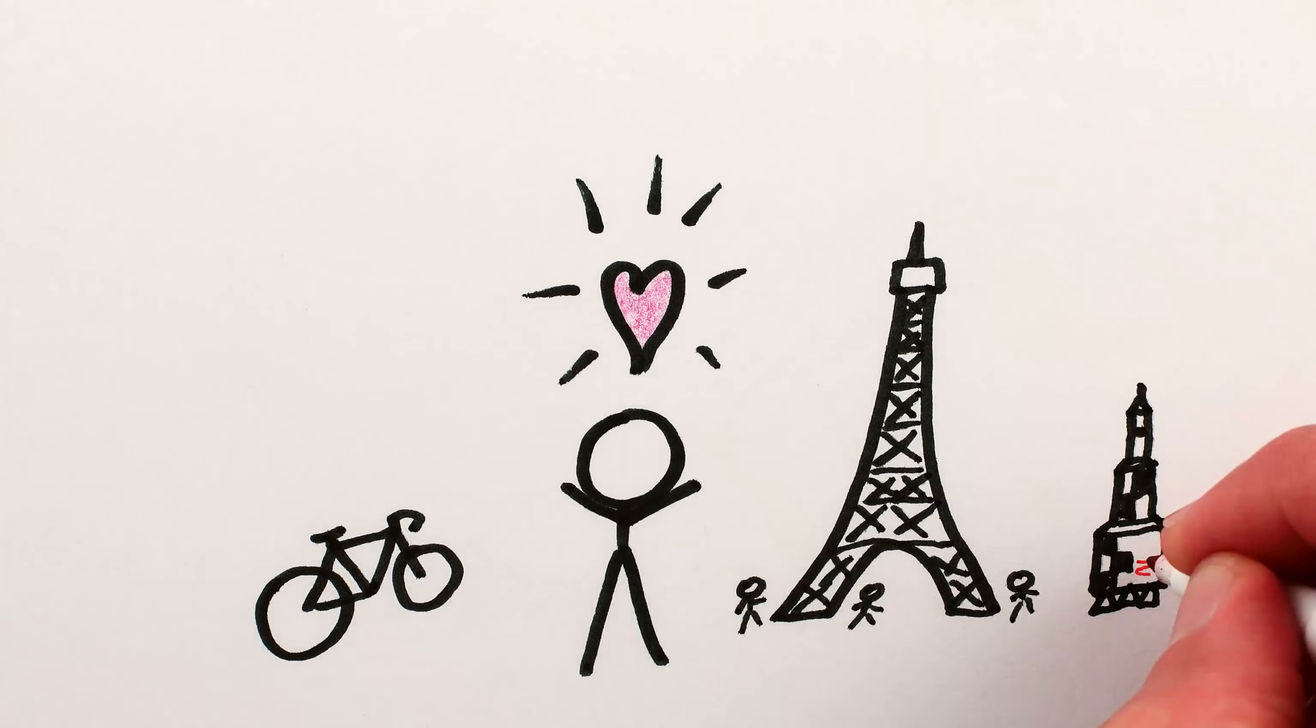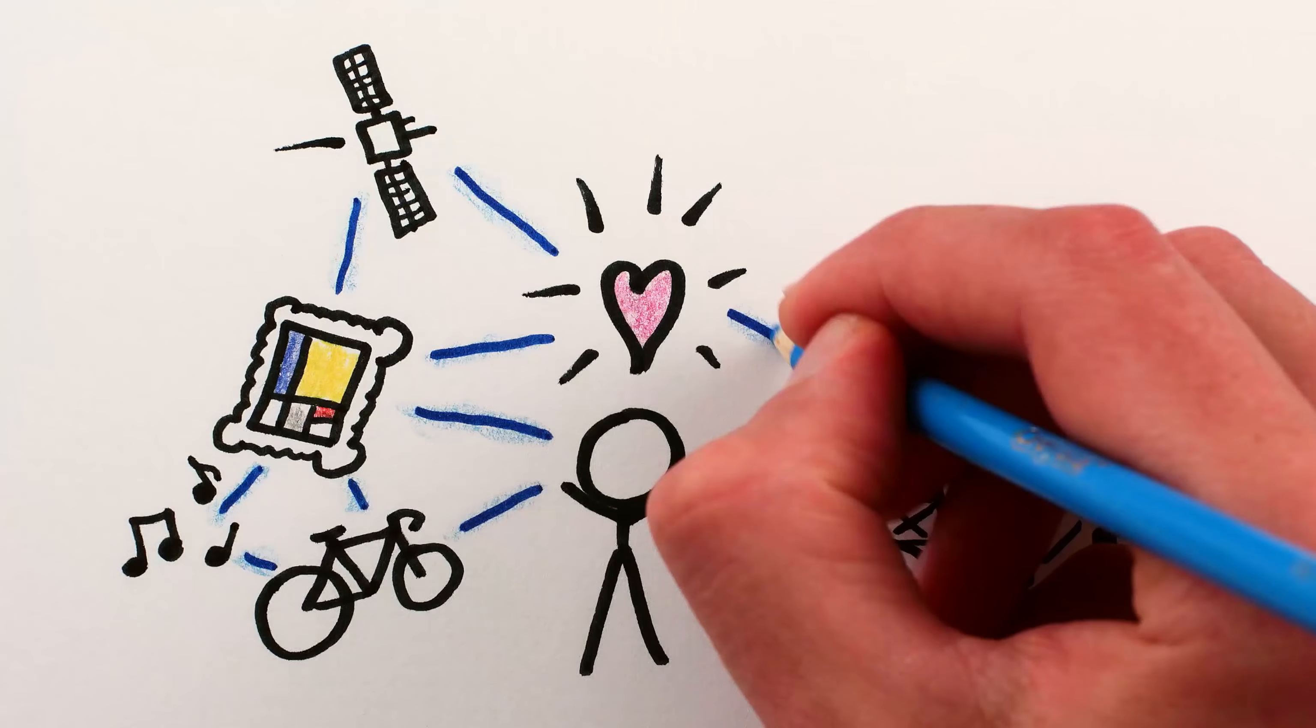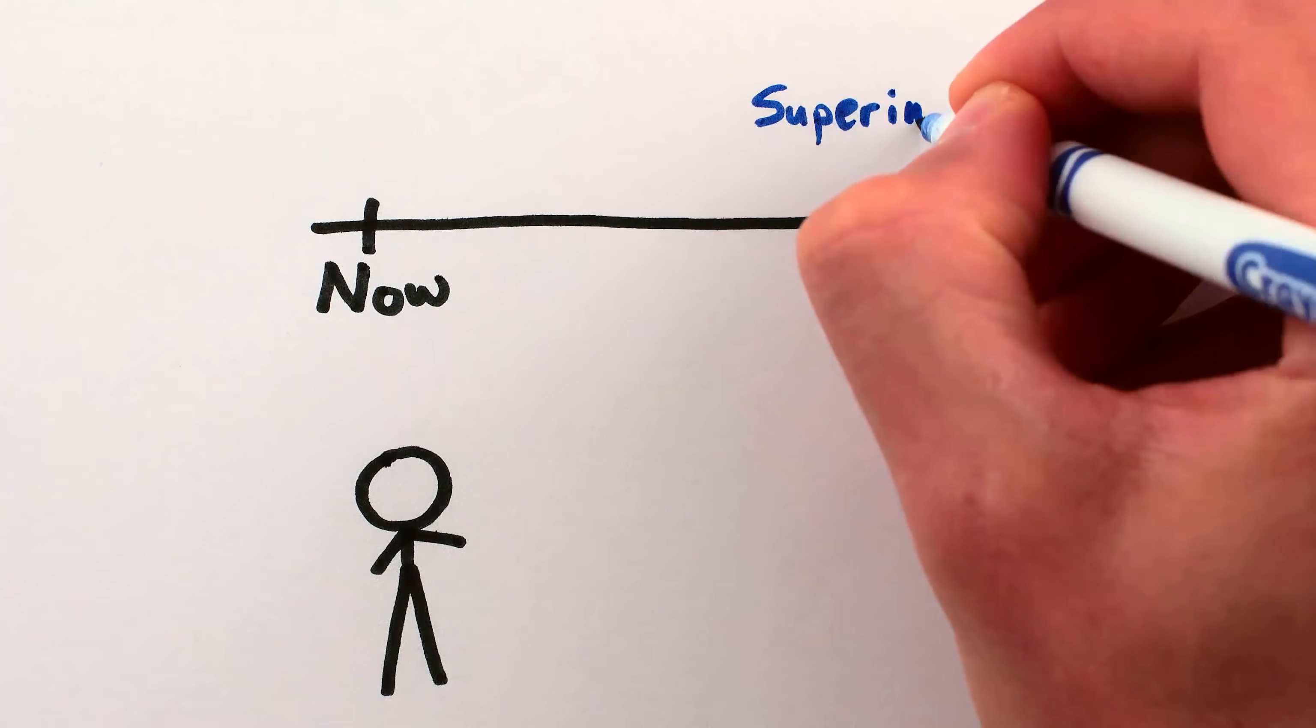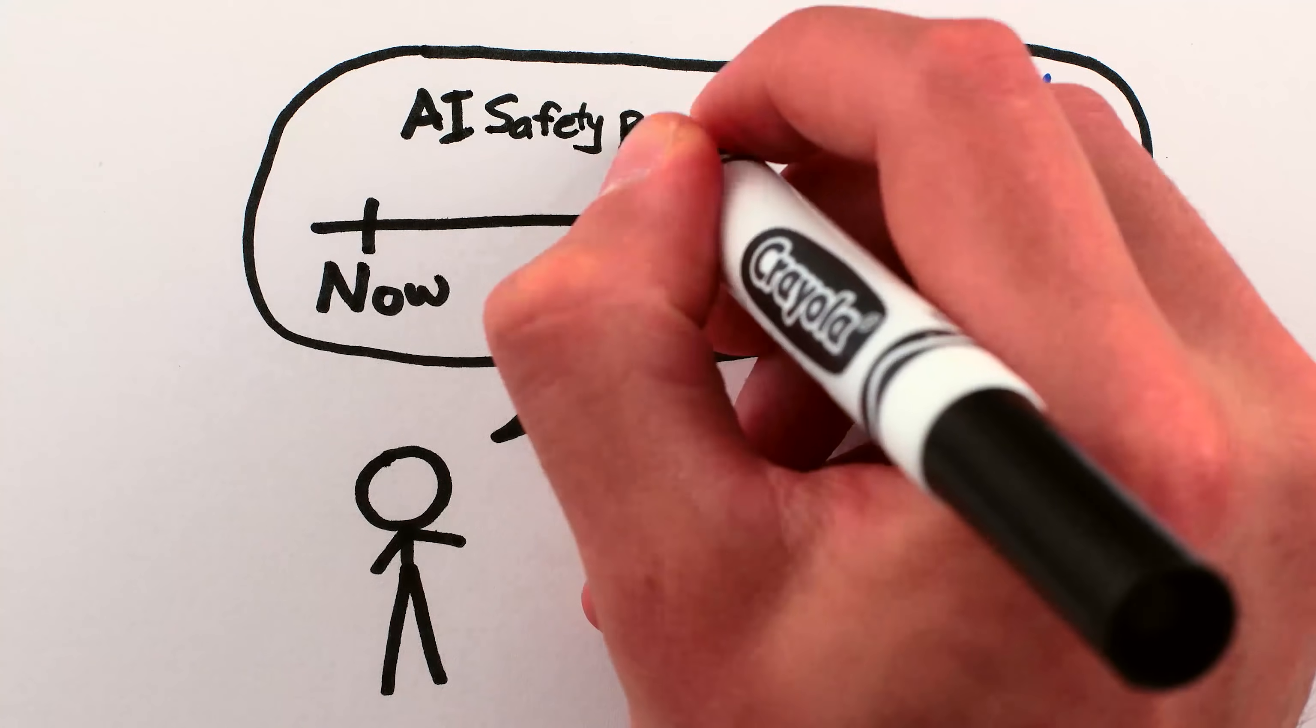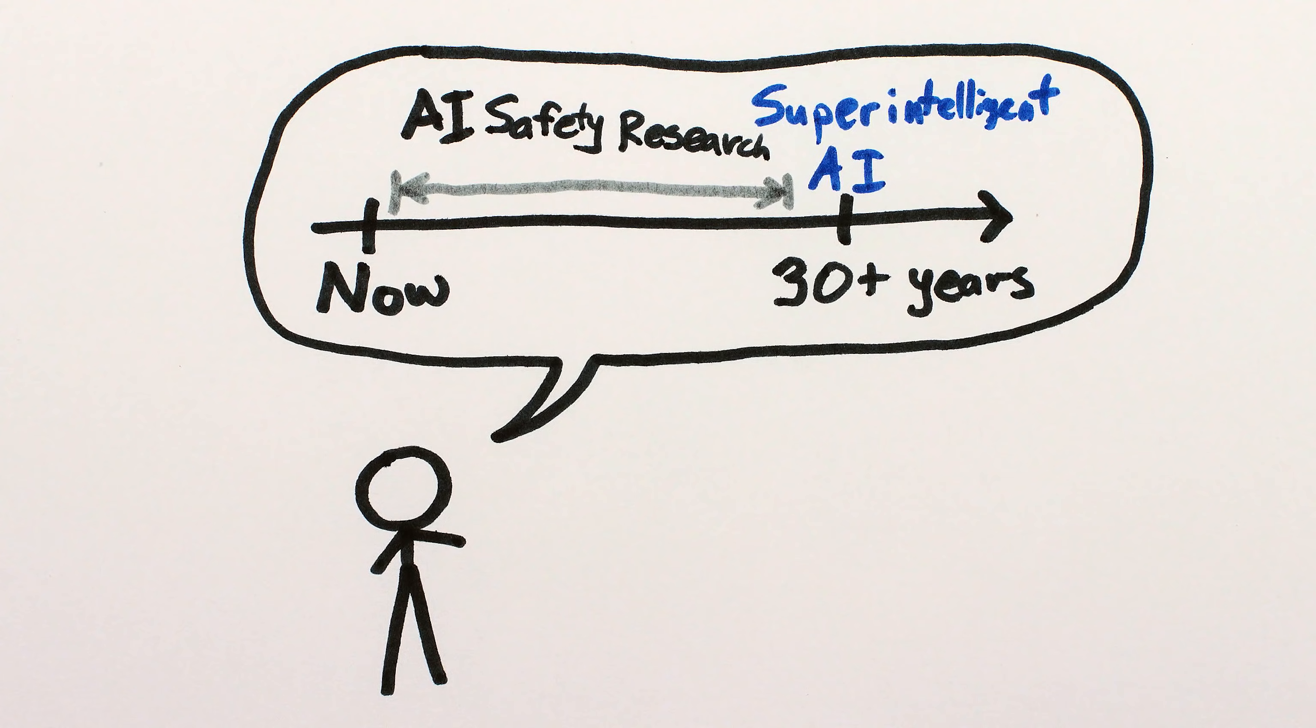Everything I love about civilization is the product of intelligence. So if AI amplifies our collective intelligence enough to solve today's and tomorrow's greatest problems, humanity might flourish like never before. Second, most AI researchers think super-intelligence is at least decades away, but the research needed to ensure that it remains beneficial to humanity rather than harmful might also take decades. So we need to start right away.